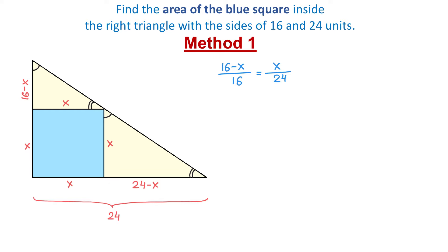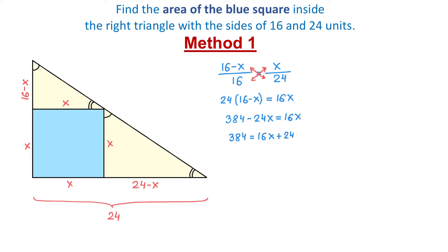To solve this, we use cross-multiplying: 16 minus x times 24 equals 16 times x. Using the distributive property on the left side gives 384 minus 24x equals 16x. Adding 24x to both sides gives 384 equals 40x. Dividing both sides by 40, we get x equals 384 over 40, which reduces to 48 over 5, or 9.6.